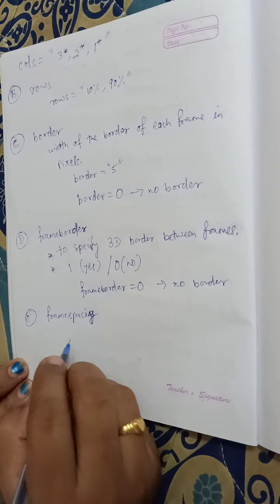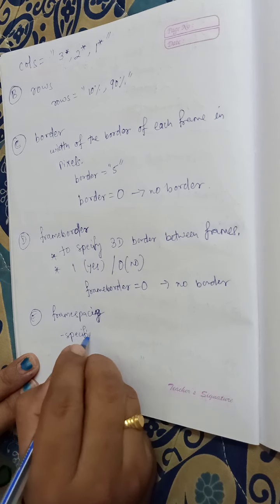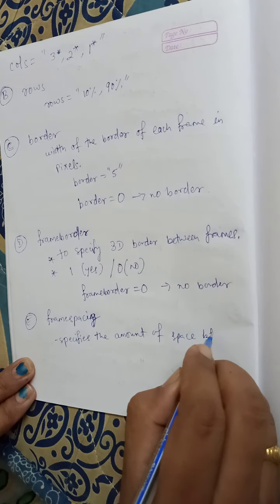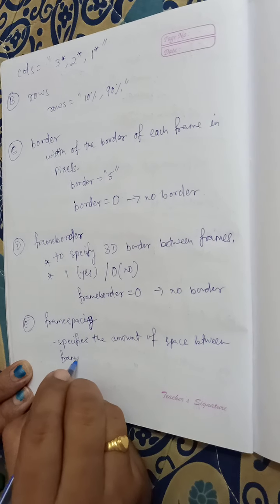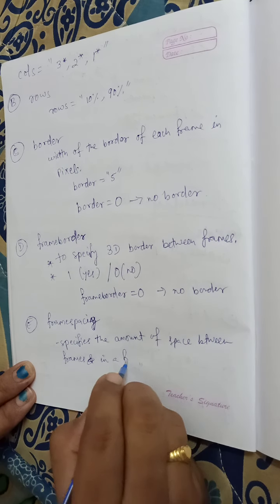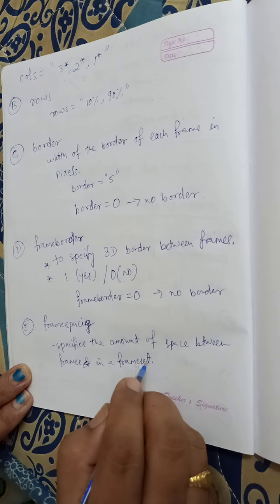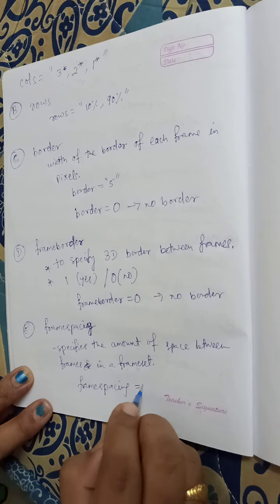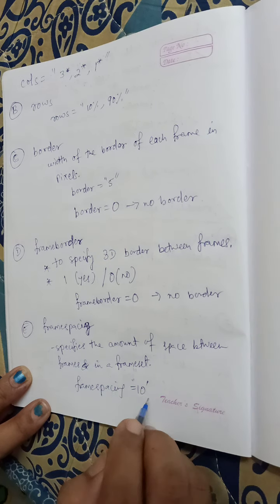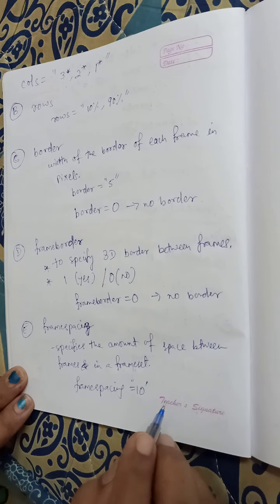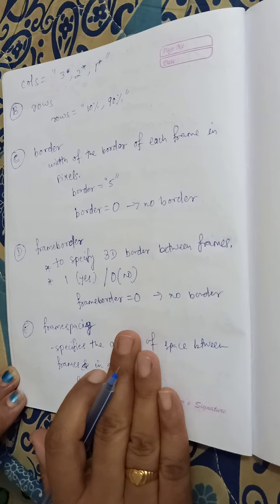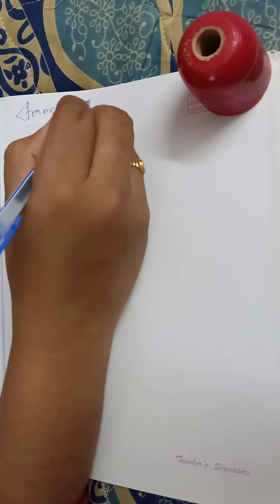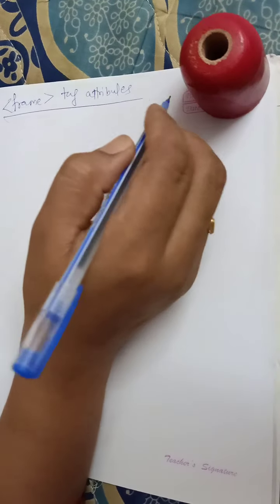Another attribute is 'framespacing'. This attribute specifies the amount of space between frames in a frameset. For example, we can write framespacing equal to 10, which means there should be 10 pixels of spacing between each frame. So this is all about the attributes for the frameset tag.